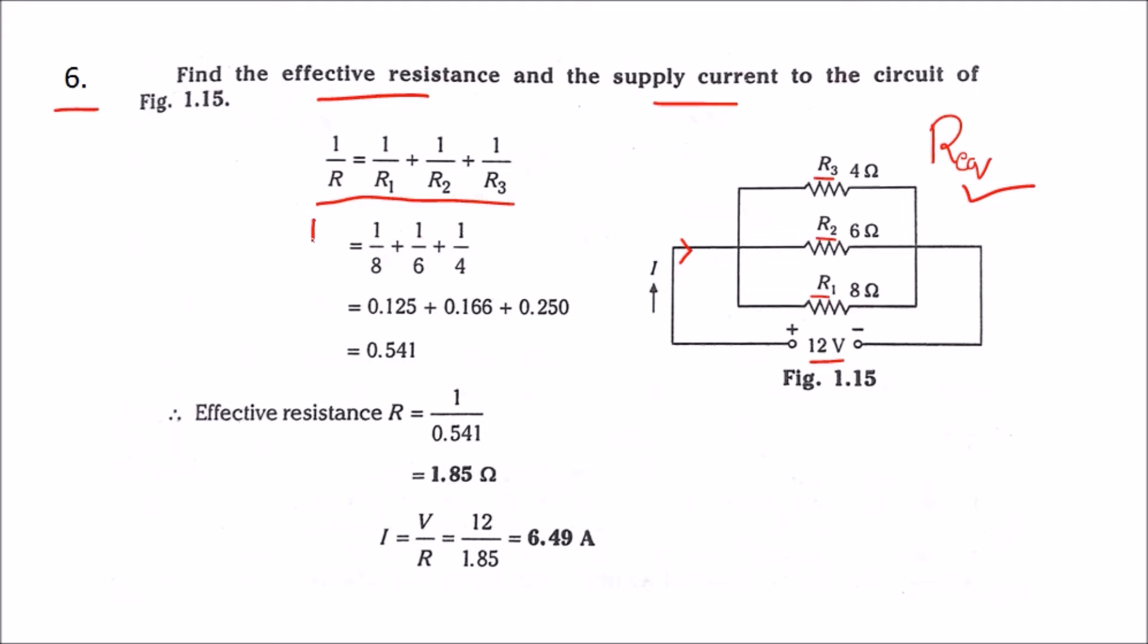This is 1 by R. So, 1 by R is equal to 1 by 8 plus 1 by 6 plus 1 by 4. These are the values: 1 by 8, 1 by 6, and 1 by 4.